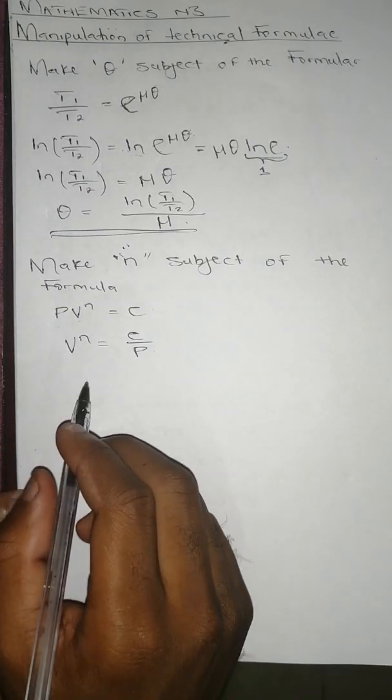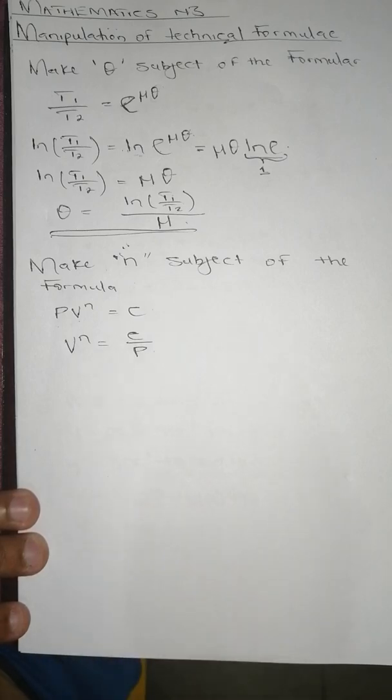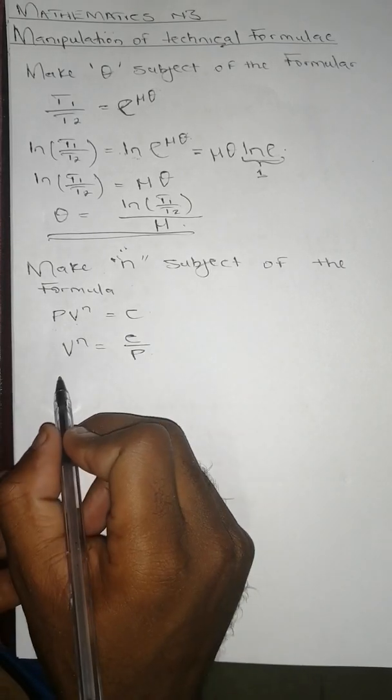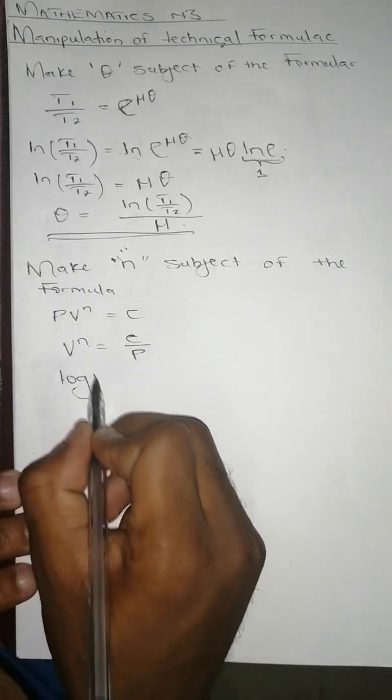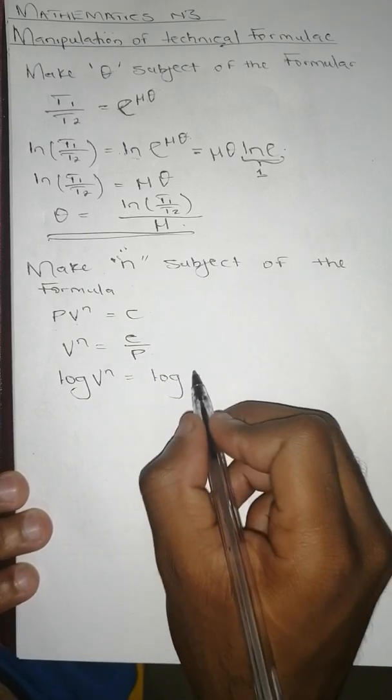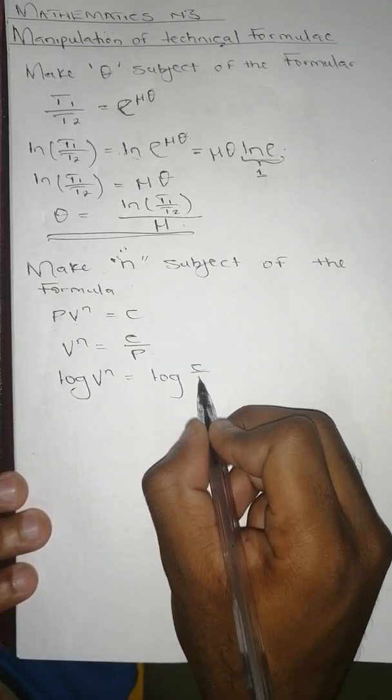After doing that, for us to get n, we're going to apply log on both sides. And it's going to be log(V^n) equals to log(C/P).